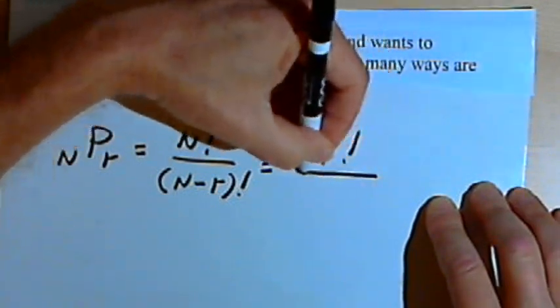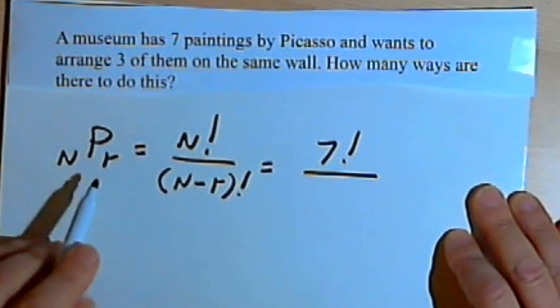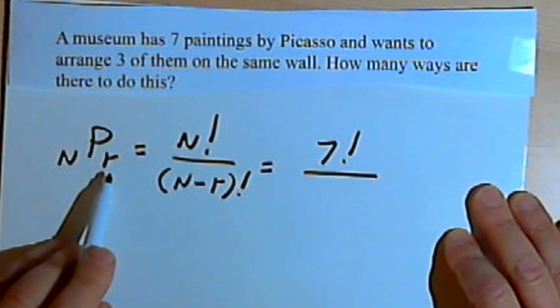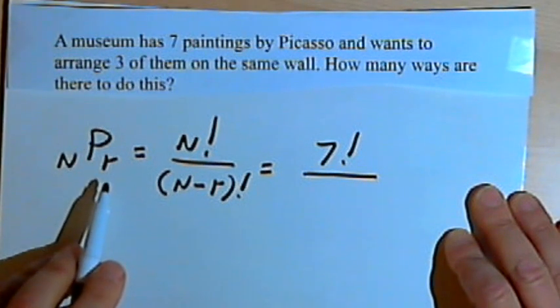So I've got 7 factorial as the numerator of my fraction. And the R is how many elements, how many paintings we're going to have in each of the arrangements. And that's just 3.